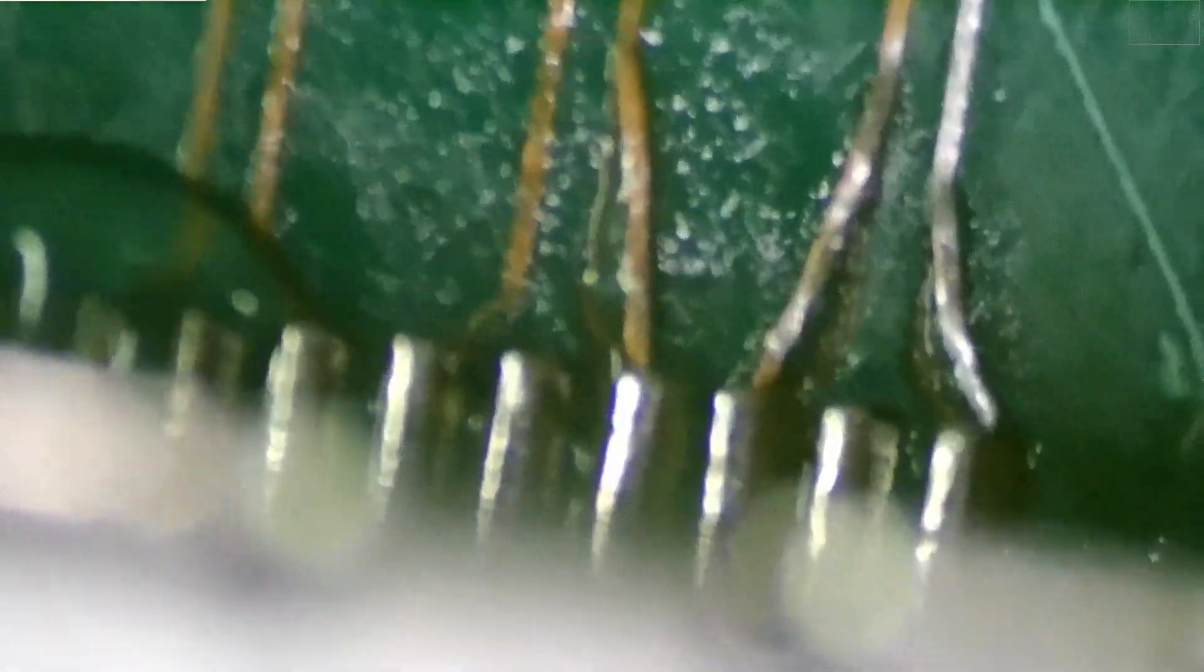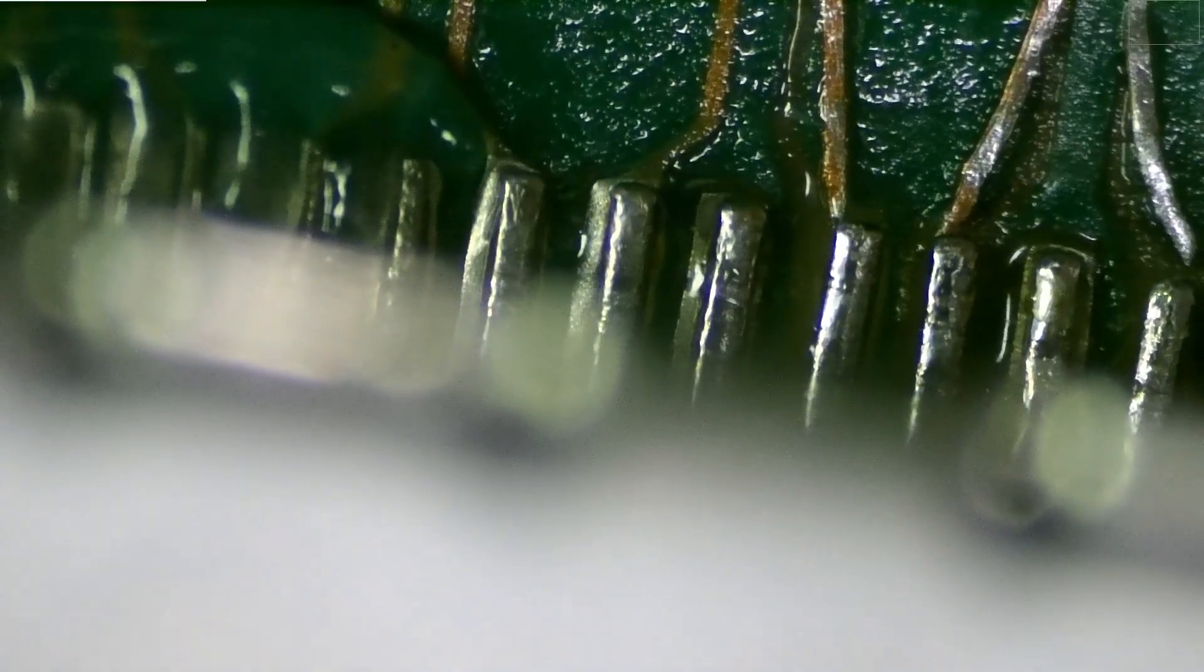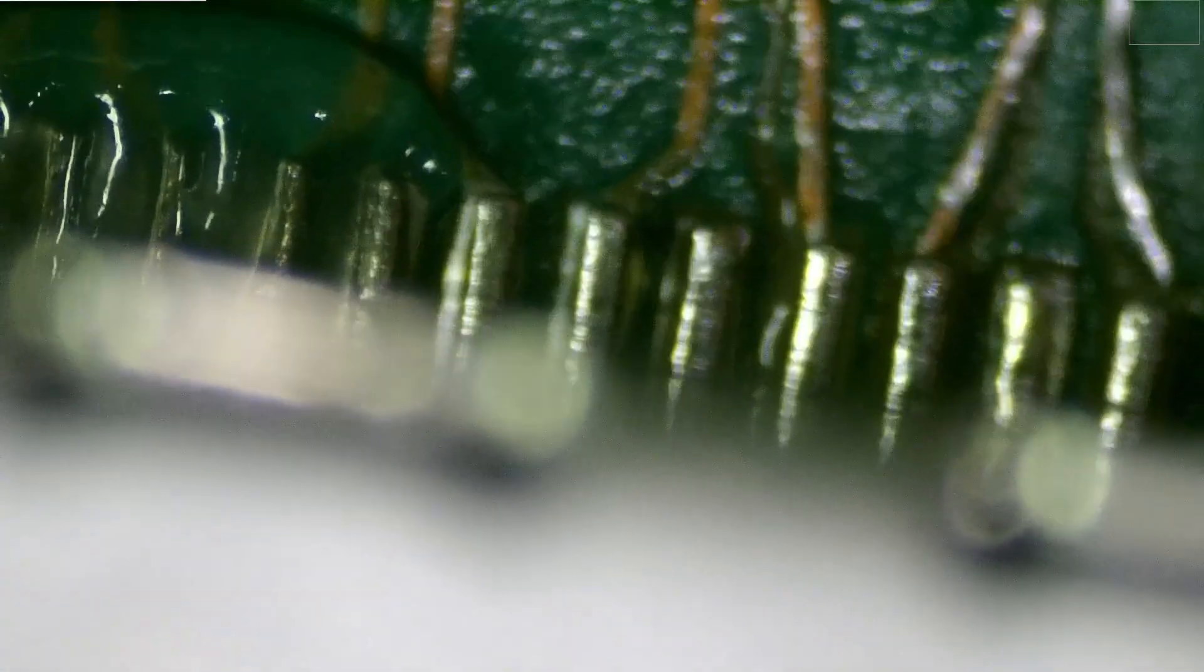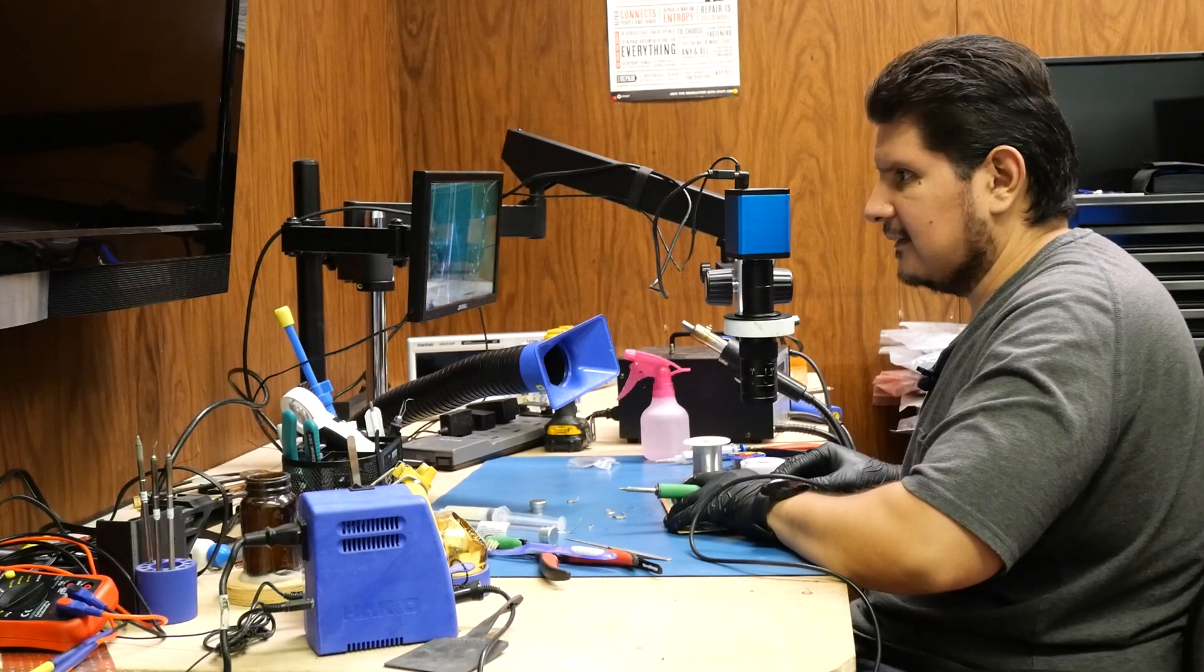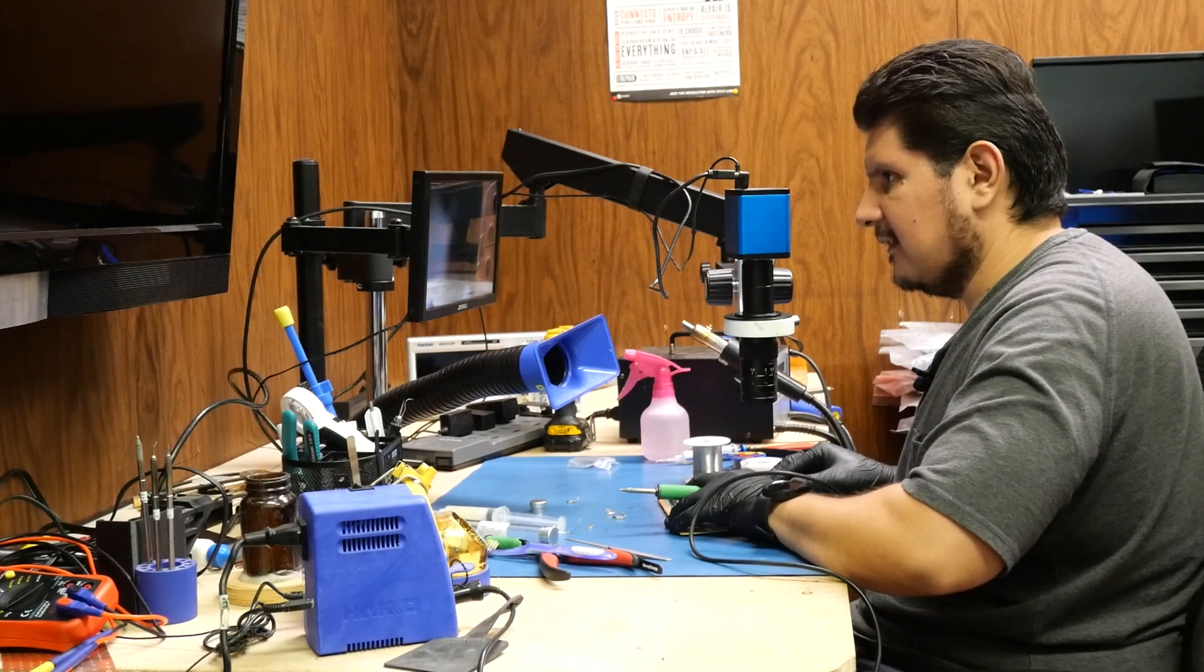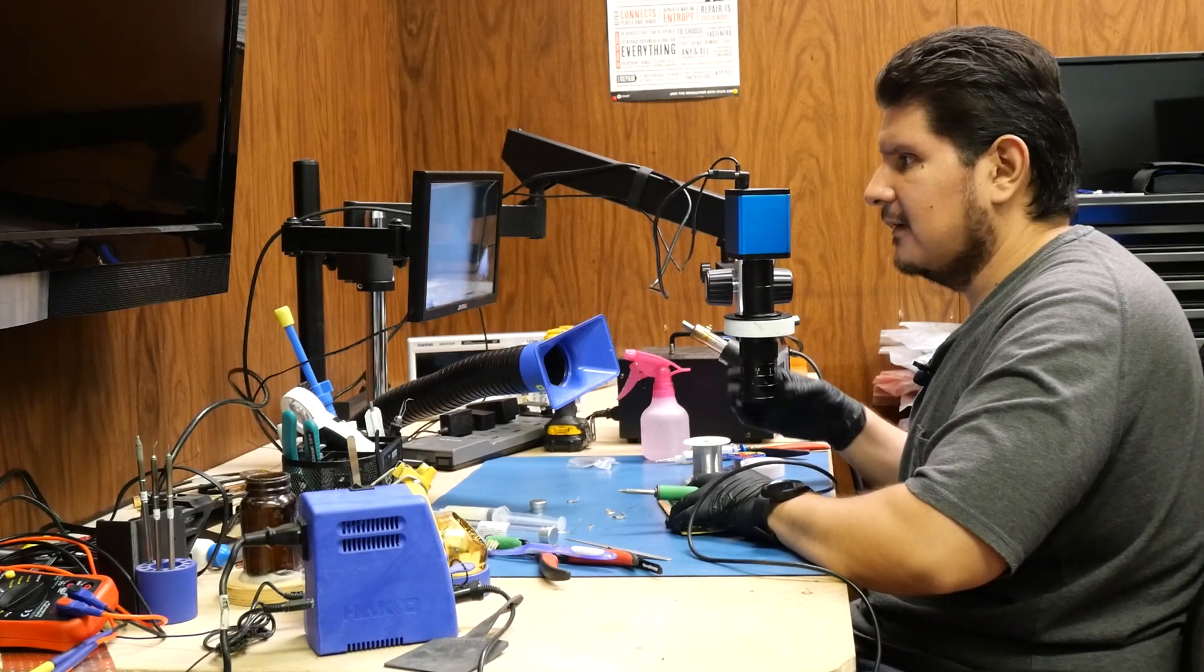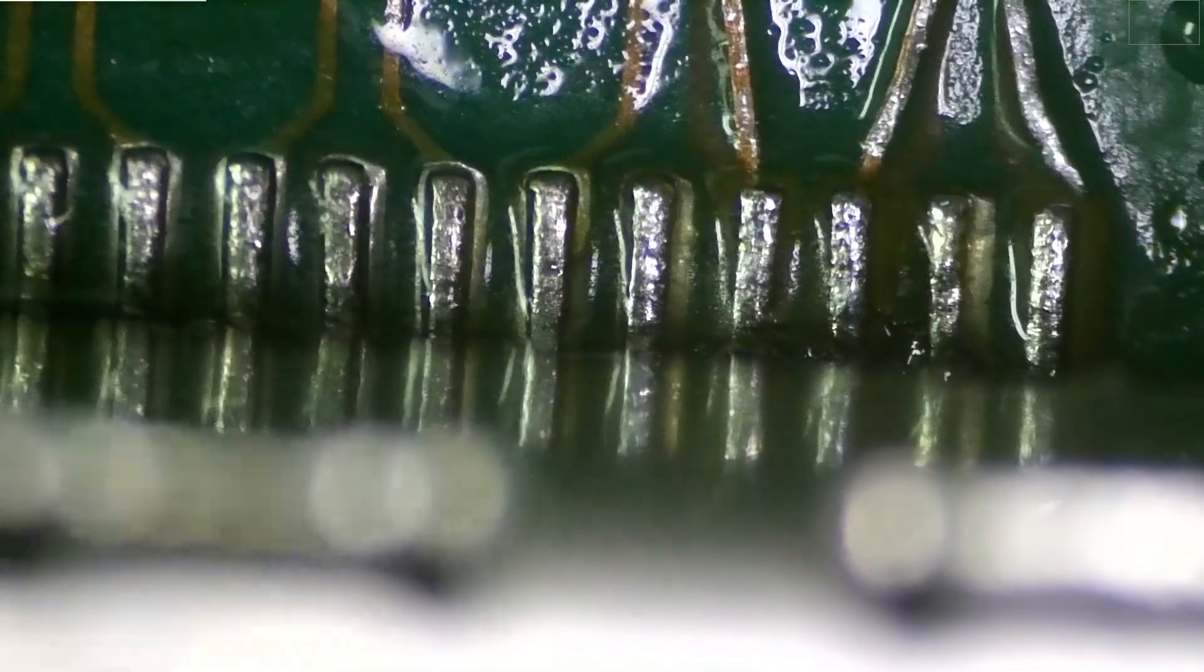So what I'll go ahead and do is tack down one of the sides of this HDMI port. Let's make sure we're still aligned. So we'll probably want to be about right there. So I've just gone ahead and tacked down the right-hand side over here. You won't be able to see it, but that's what I did.